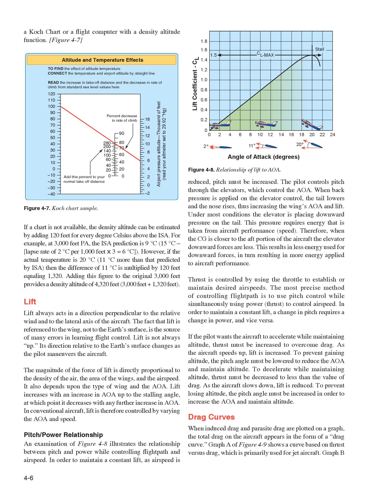Lift always acts in a direction perpendicular to the relative wind and to the lateral axis of the aircraft. The fact that lift is referenced to the wing, not to the earth's surface, is the source of many errors in learning flight control — lift is not always up. Its direction relative to the earth's surface changes as the pilot maneuvers the aircraft. The magnitude of the force of lift is directly proportional to the density of the air, the area of the wings, and the airspeed. Lift increases with an increase in AOA up to the stalling angle, at which point it decreases with any further increase in AOA.